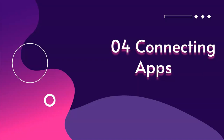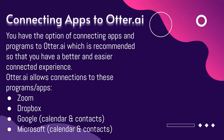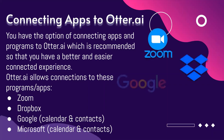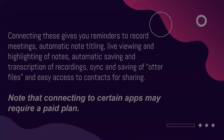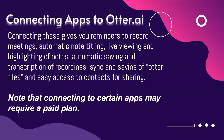So how do we connect this to apps like Zoom? You have the option of connecting apps and programs to Otter AI, which is recommended so you can have a better and easier experience. Besides Zoom, Otter AI also allows you to connect to tools like Dropbox, Google Calendars and Contacts, and Microsoft Calendars and Contacts, among many other different apps. Connecting these apps gives you reminders to record meetings, automatic note titling, live viewing and highlighting of the notes, as well as automatic saving and transcription of the recordings, and the ability to sync and save Otter files for easy access to contacts for sharing. However, certain connecting apps require a paid plan.